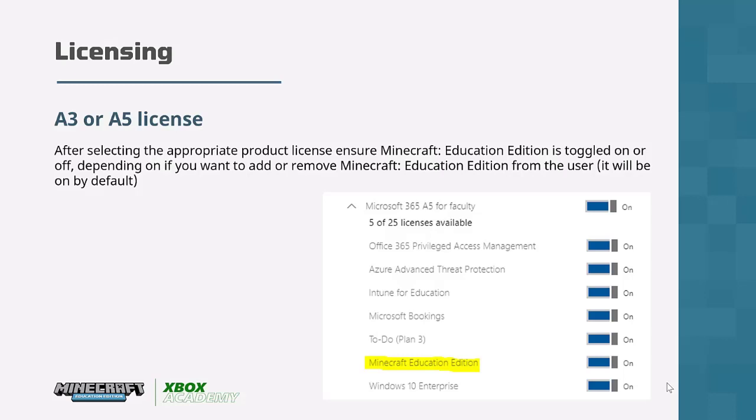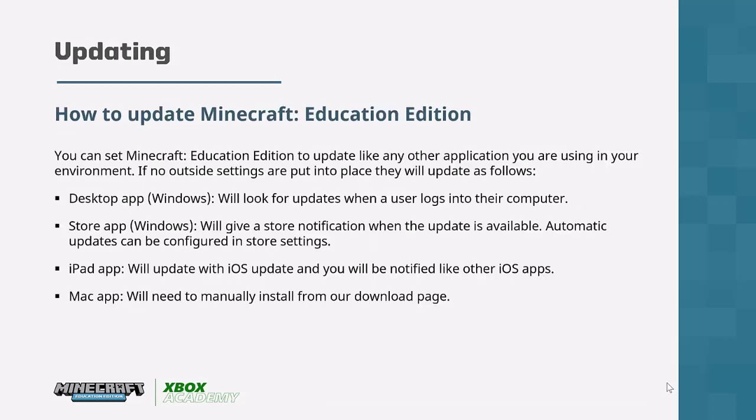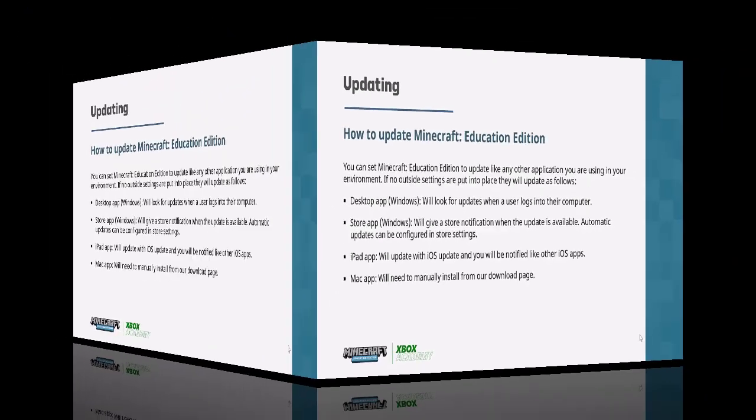Once the license is assigned, make sure Minecraft Education Edition is toggled on in your A3 or A5 faculty settings. For updates: on Windows, the desktop app will automatically look for updates when a user logs in. The Microsoft Store will give notifications when updates are available, and automatic updates can be configured in store settings. On iPad, it updates with iOS updates like any other app. On Mac, you will need to manually install from the download page.